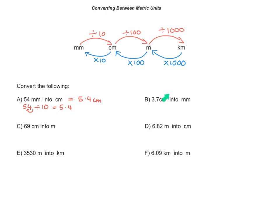Now let's do the next one: 3.7 centimetres into millimetres. Here I am converting larger units — because centimetres are larger than millimetres — into smaller units. When I convert larger units into smaller units, I multiply. When converting centimetres to millimetres, I multiply by 10. So 3.7 multiplied by 10 equals 37 — I've moved the decimal place one place to the right. So 3.7 centimetres is equivalent to 37 millimetres.